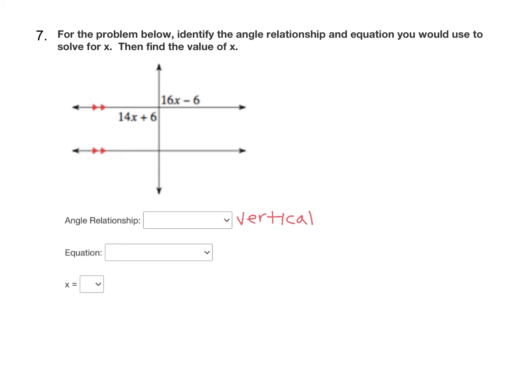Vertical angles are congruent, and that just means they have the same measure. So for our equation, we'll have 14x plus six equals 16x minus six. Go ahead and choose that from the dropdown for equations.